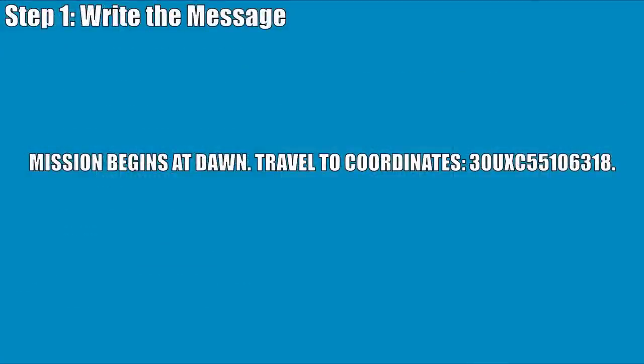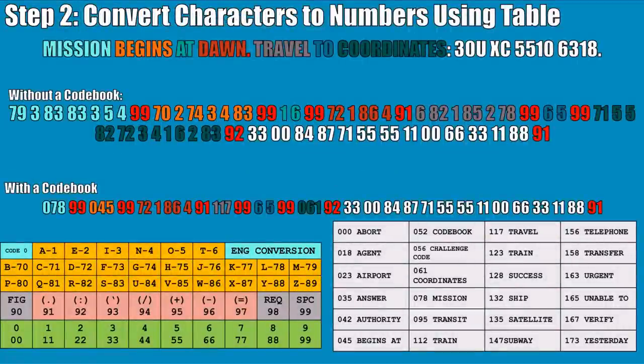The first step in encoding a message is to write the message. For today's example, the message is: 'Mission begins at dawn. Travel to coordinates: 30 Uniform X-ray Charlie 5 5 1 0 6 3 1 8.' The first step in the encryption process is to convert that message to numbers using our conversion table. This is where our codebook is already really helpful because we've got a lot of long words we can shorten down.